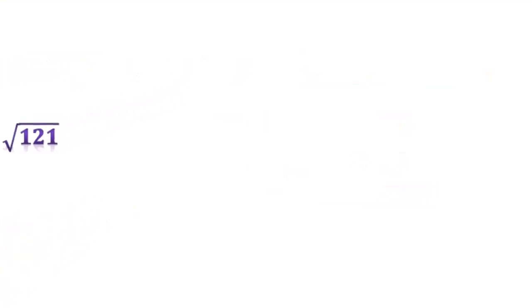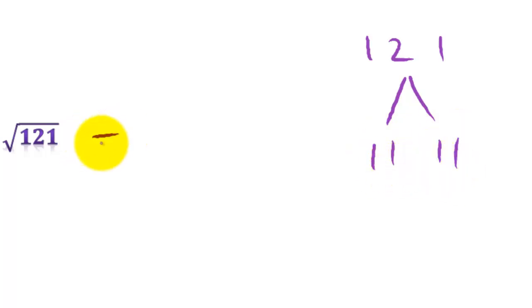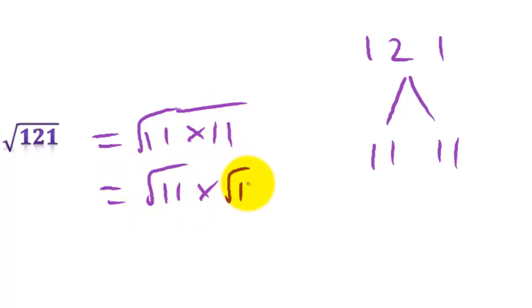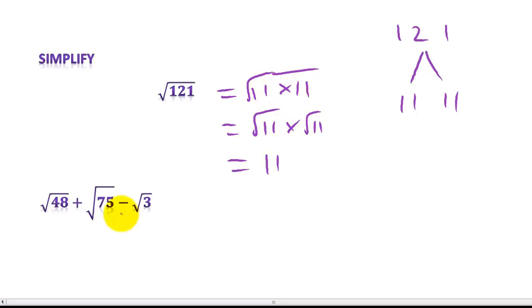Let's look at some simplifications. Here we've got the square root of 121. If we factorize 121, we get 11 times 11, which equals the square root of 11 times the square root of 11, which equals 11. You should know your square numbers all the way up to 144 minimum — that's the square of 12. You should also know: 13 squared is 169, 14 squared is 196, and 15 squared is 225.